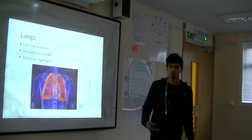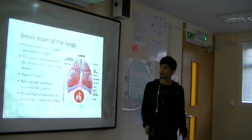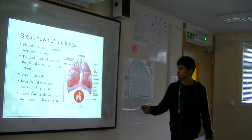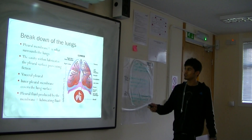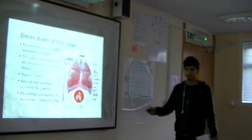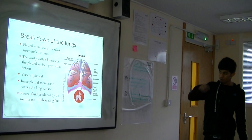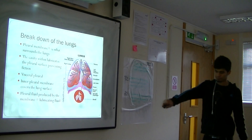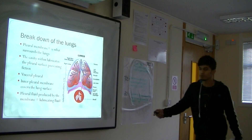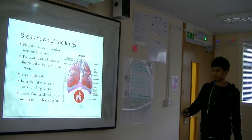The left lung is smaller because it has two lobes, whereas the right lung has three lobes. The pleural membrane surrounds the lung and keeps it intact. The cavity within the lungs lubricates the lungs so there is no damage. The inner pleural membrane is the inner surface of the lung, and the pleural fluid produces the lubricating fluid, which is produced by the membrane.